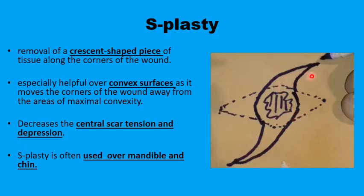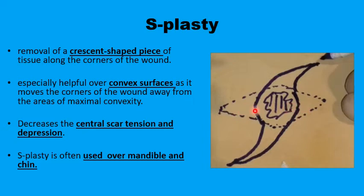The S-plasty provides the same advantage as the elliptical excision, but rather than a triangle at the ends you have a crescent shape. This is obviously longer, so it can provide the 3-to-1 or 4-to-1 ratio in a smaller space, and gives a more acute angle at the ends to avoid dog ears. It is particularly useful when you want to prevent tension on the central part of the wound to avoid wound depression — especially useful over convex surfaces like the nasal bridge or chin.